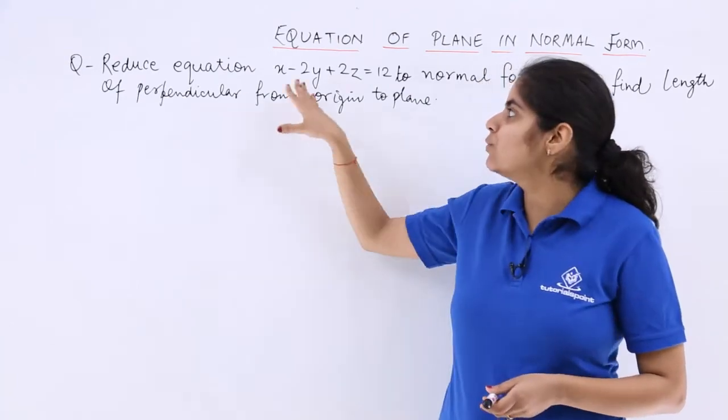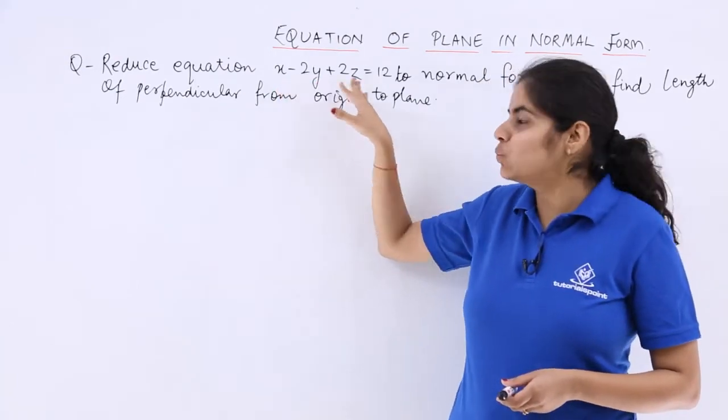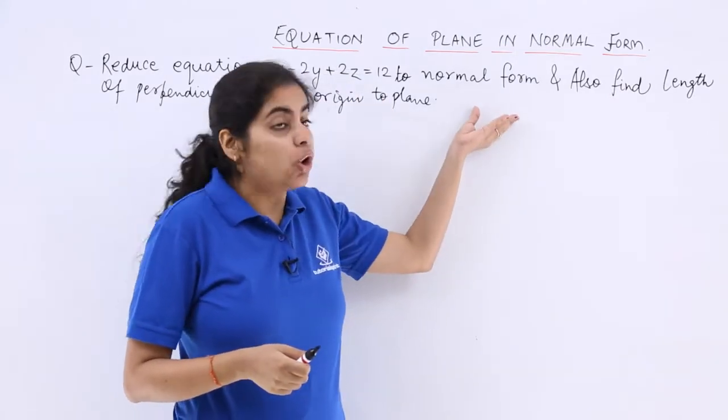Let's see what this question says. It says reduce the equation x minus 2y plus 2z equals 12 to the normal form.